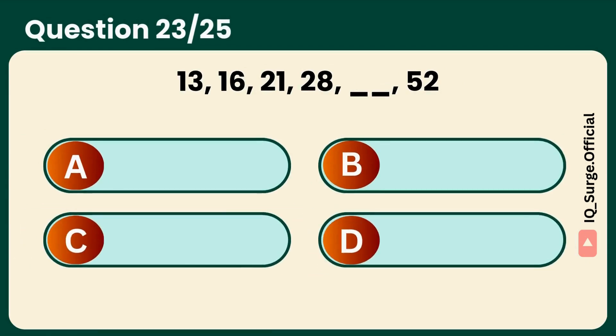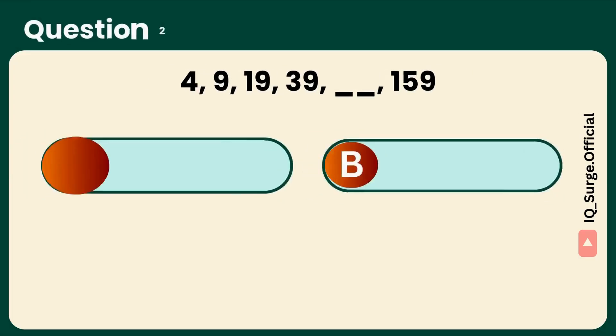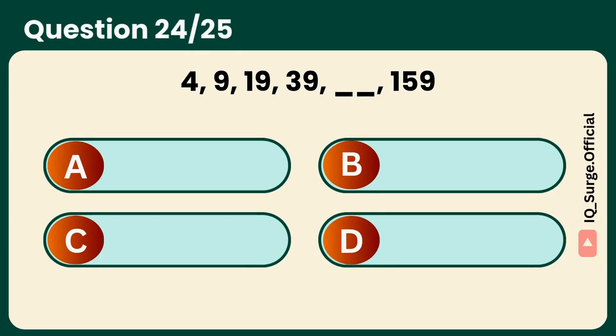The jumps are uneven. What's missing? Yes, thirty-seven fits the sequence. Each step almost doubles. Can you spot it? Right. It's seventy-nine. Well played.